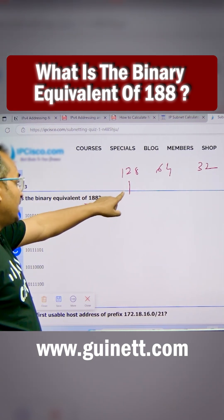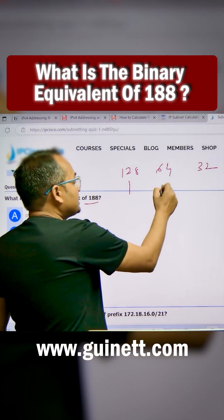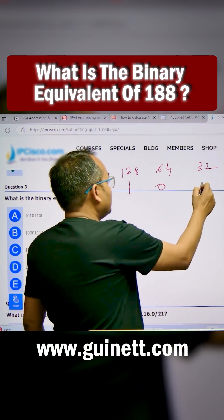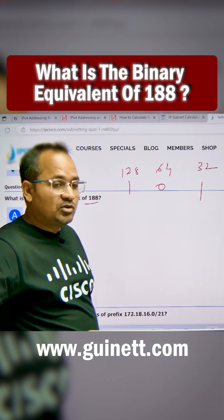If you add 64, it's going to be 192, so it's going to be 0. 32 is going to be 0 definitely. So 128 plus 32, that's going to be 160.